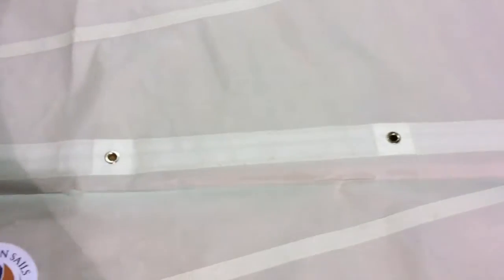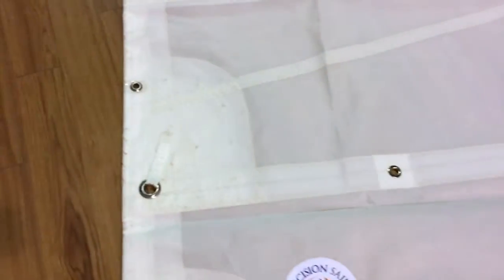We've doubled up on all the foot leech luff tapes. We've done triple stitching for all the seams. And at each one of these reef points, we put a reef belt, giving them lots of reinforcement there.